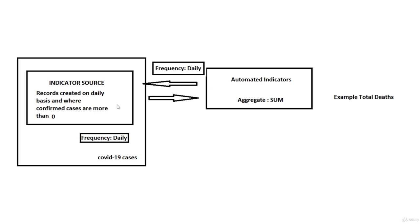It is highly important to have the same frequency for both of them. The indicator source should have daily, and automated indicators should also have daily if you want to use this automated indicator for this indicator source.